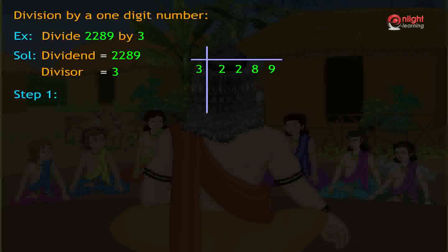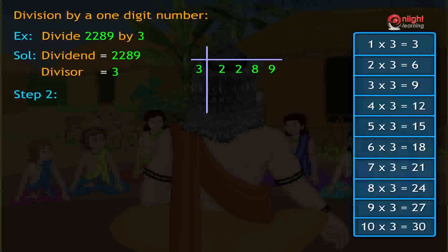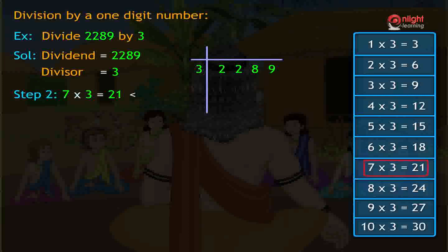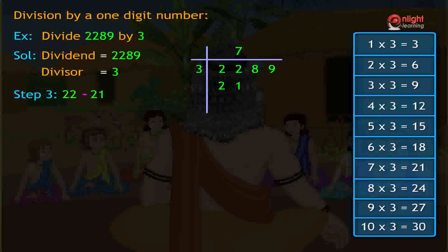Step 1: Consider the first digit from the left of the dividend. Here it is 2. Compare 2 with the divisor 3. It is less than 3, so we cannot divide 2 by 3. So consider the numbers in both thousands and hundreds place together, that is 22. Check the products of the 3 multiplication table. How many times of 3 will give the product 22 or less than 22? 7 times 3 is 21, which is less than 22, and 8 times 3 is 24, which is greater than 22. So consider 7 multiplied by 3 equals 21. Write 7 in the quotient place and 21 below 22. Now subtract 21 from 22. The difference is 1.